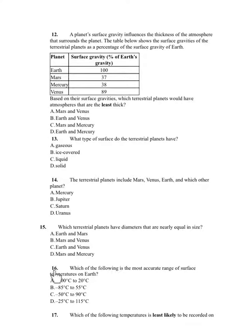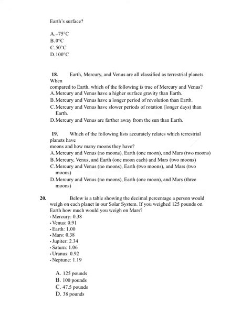Number 16. Which of the following is the most accurate range of surface temperatures on Earth? A. Minus 100 degrees Celsius to 20 degrees Celsius. B. Minus 85 degrees Celsius to 55 degrees Celsius. C. Minus 50 degrees Celsius to 90 degrees Celsius. D. Minus 25 degrees Celsius to 115 degrees Celsius. Number 17. Which of the following temperatures is least likely to be recorded on Earth's surface? A. Minus 75 degrees Celsius. B. Zero degrees Celsius. C. Fifty degrees Celsius. D. One hundred degrees Celsius.